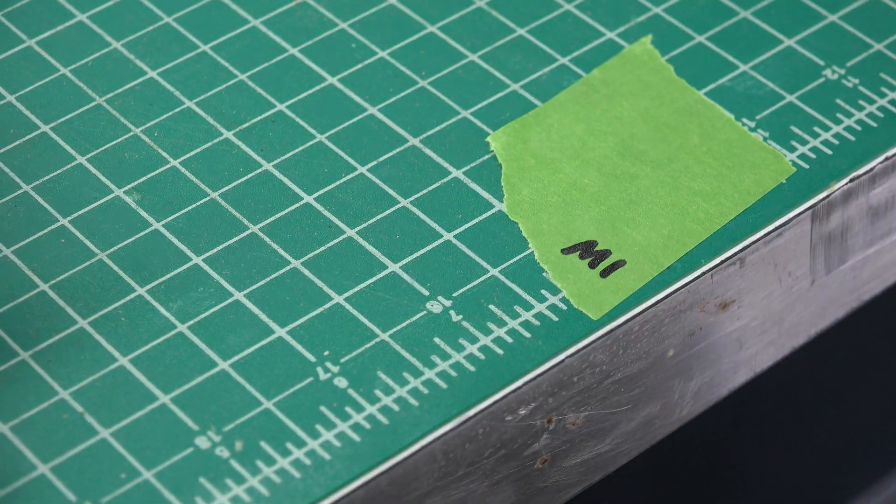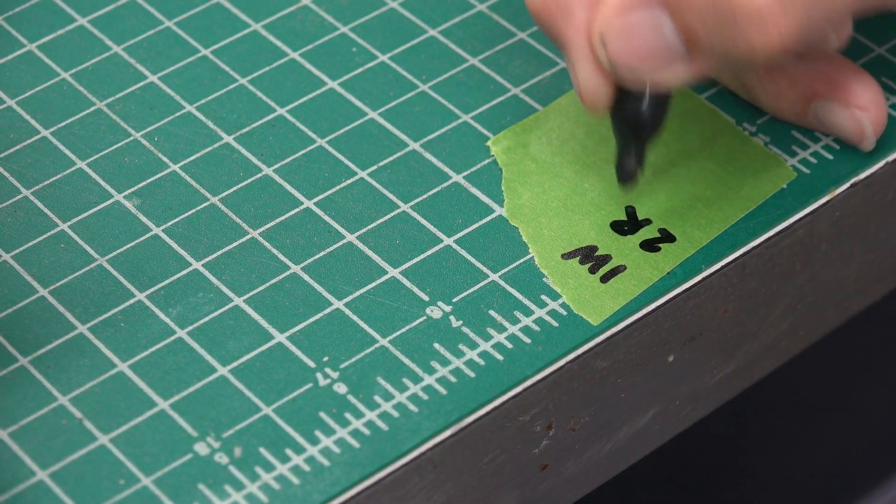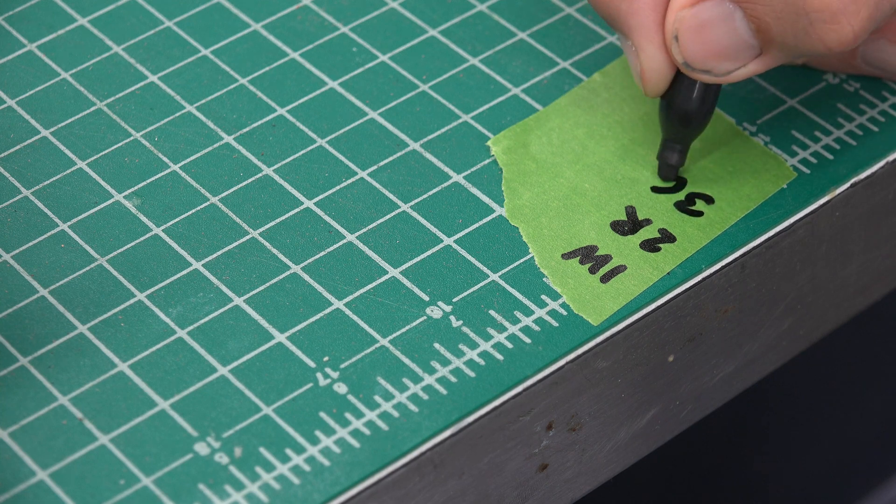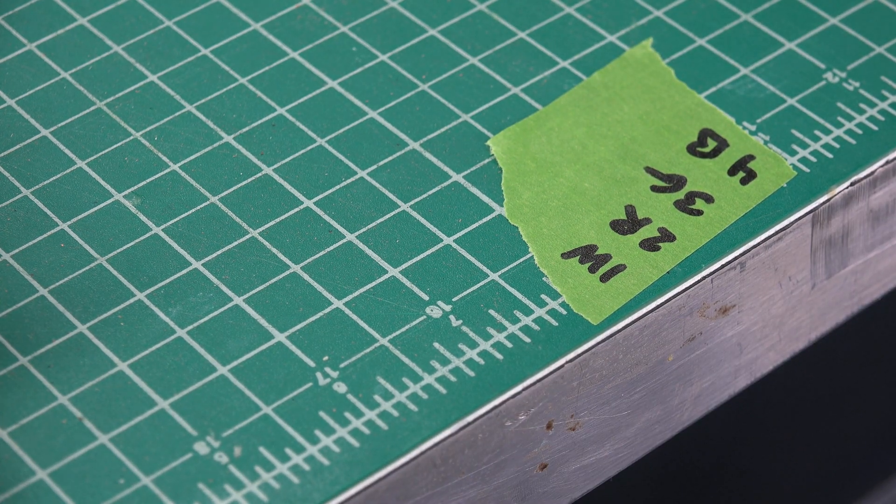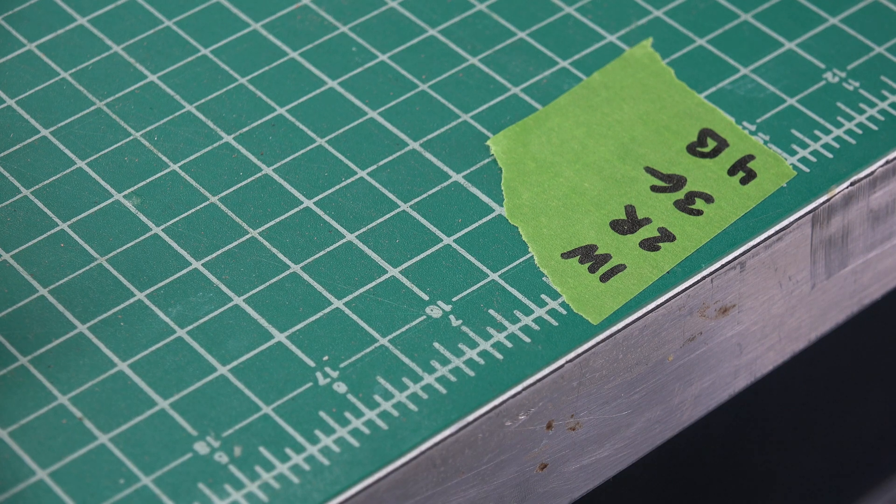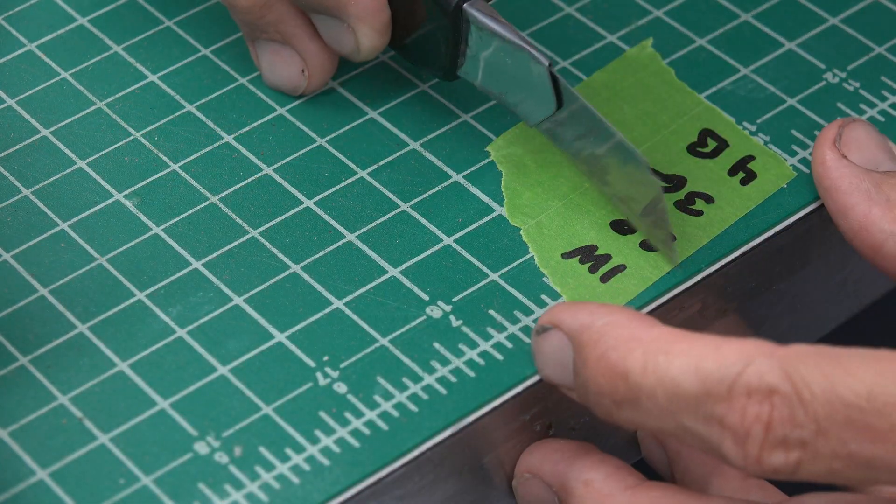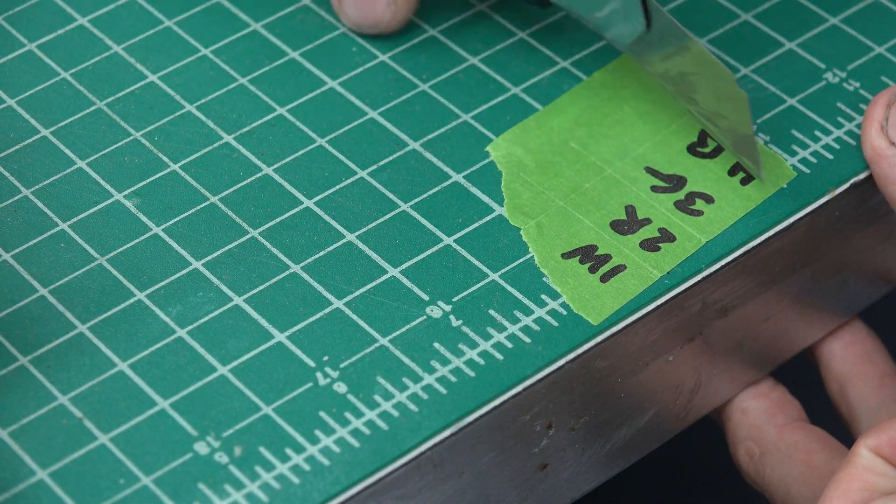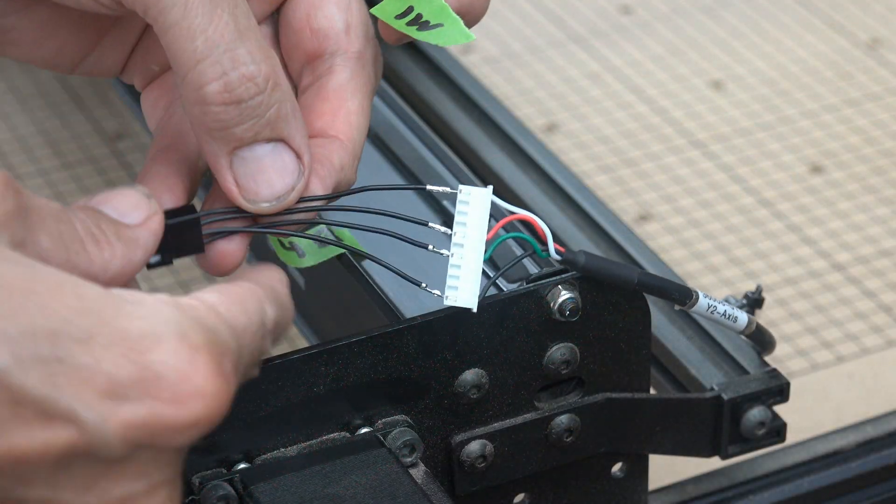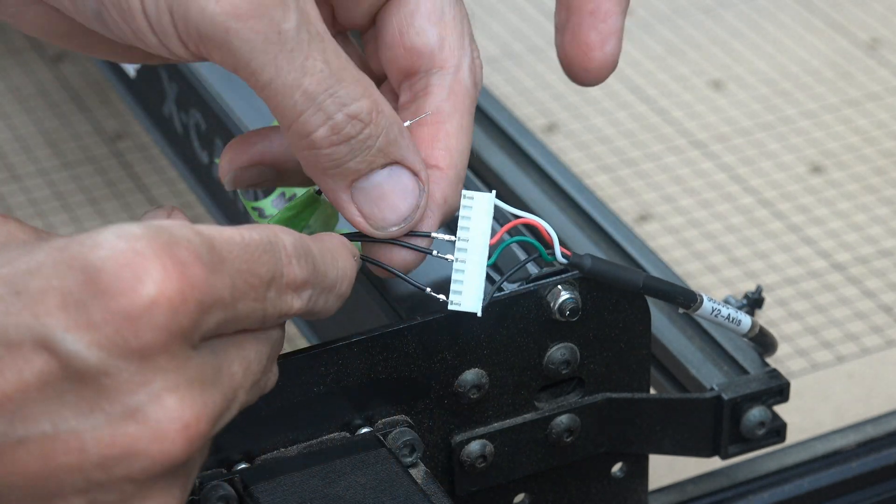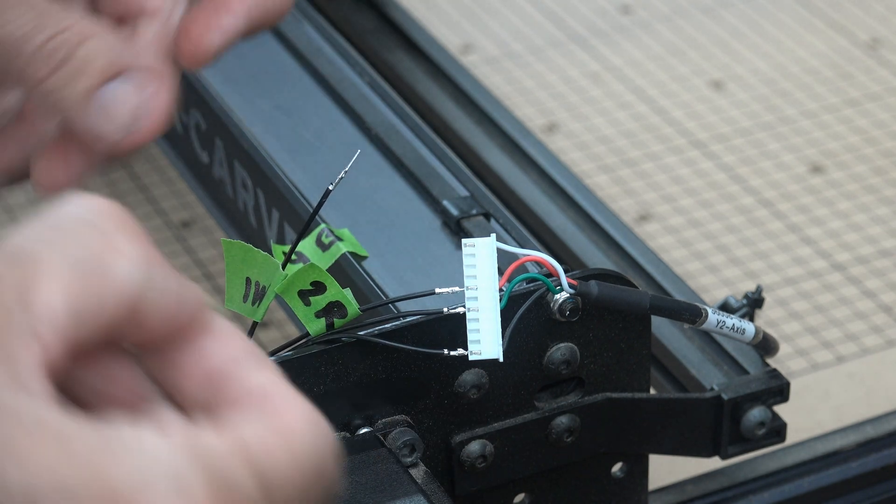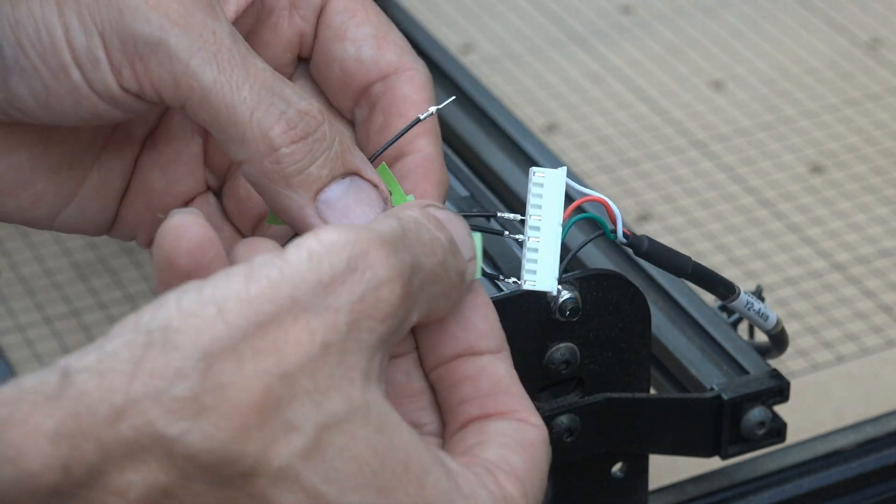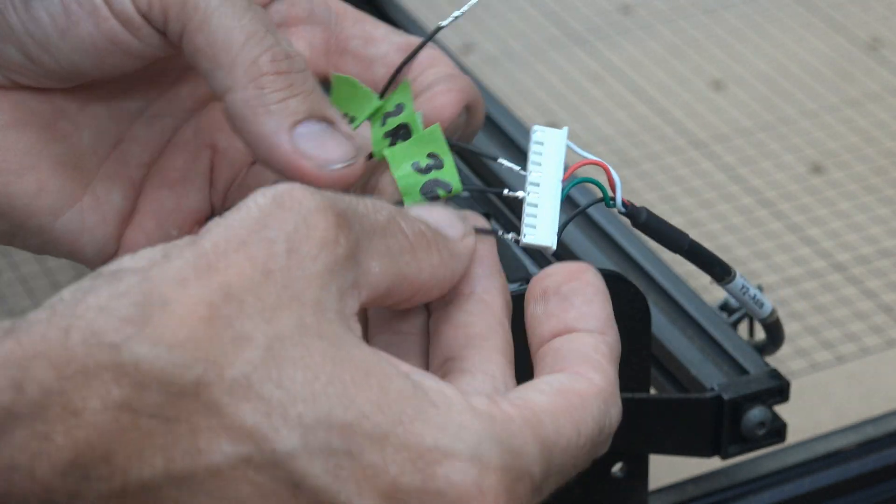Before you pull your pins out, grab some painters tape and write down the corresponding numbers to the colors. One for W for white, two red, three green, four black. We are going to stick these on the wires so we don't lose track of them while inserting them into the Molex connector. Now take the small pieces of tape you just cut up and attach them to the wires before you pull each one of them out, corresponding to their numbers and their colors.